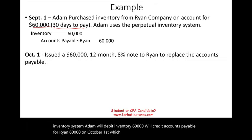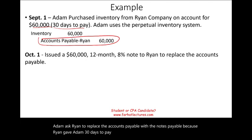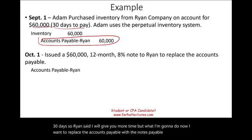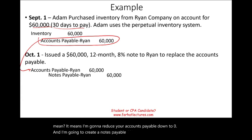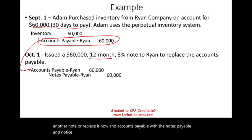Ryan agrees to give Adam more time but converts the accounts payable to a notes payable: the accounts payable is reduced to zero and a notes payable of $60,000 is created at 8% for one year. This is a form of refinancing — replacing accounts payable with notes payable. When Adam eventually pays, he'll pay the $60,000 plus interest.